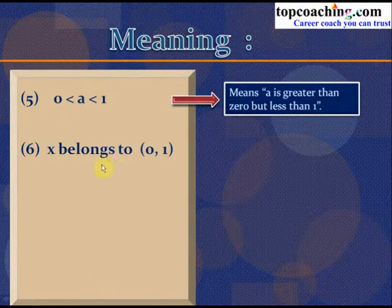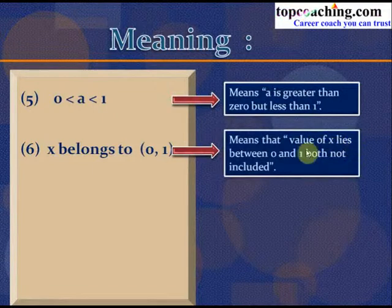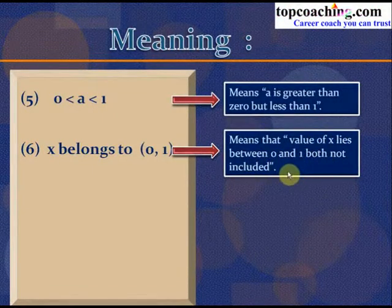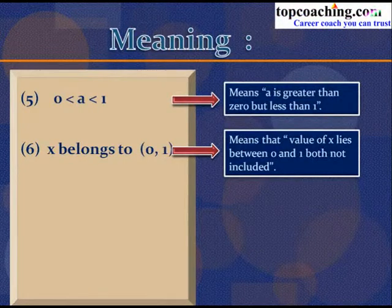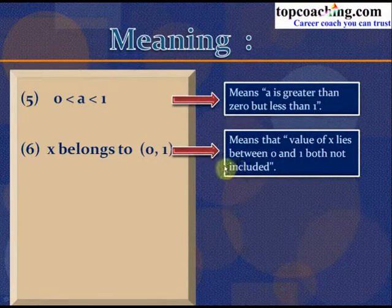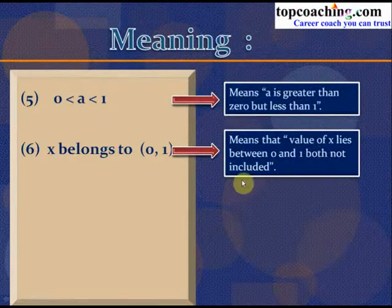If x belongs to (0, 1), it simply means the value of x lies between 0 and 1, both not included. The value could be 0.5, 0.3, and so on, but it would not equal 0 and would not equal 1. This open bracket sign denotes that both endpoints are excluded.